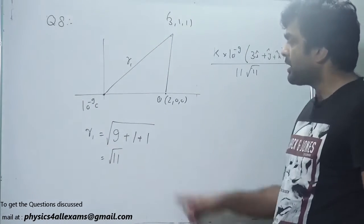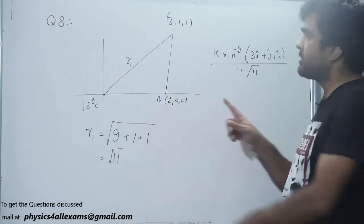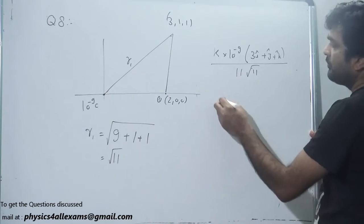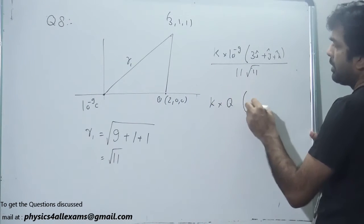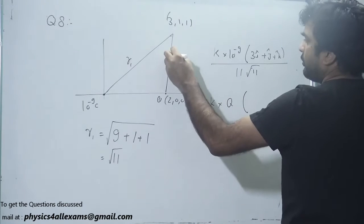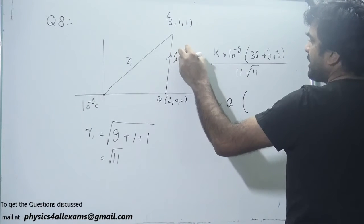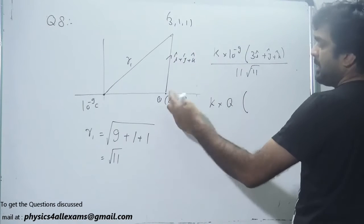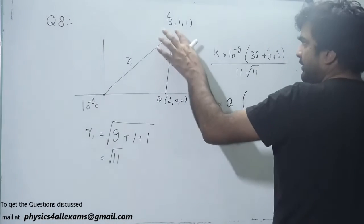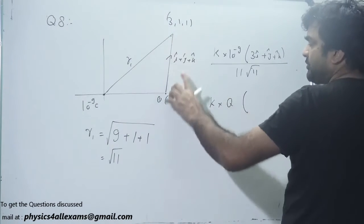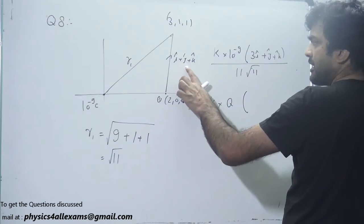What about the electric field due to charge Q? At this point electric field will be K into Q. Q is unknown. Position vector of this will be i cap plus j cap plus k cap. Position vector of this point with respect to this charge will be i cap plus j cap plus k cap.